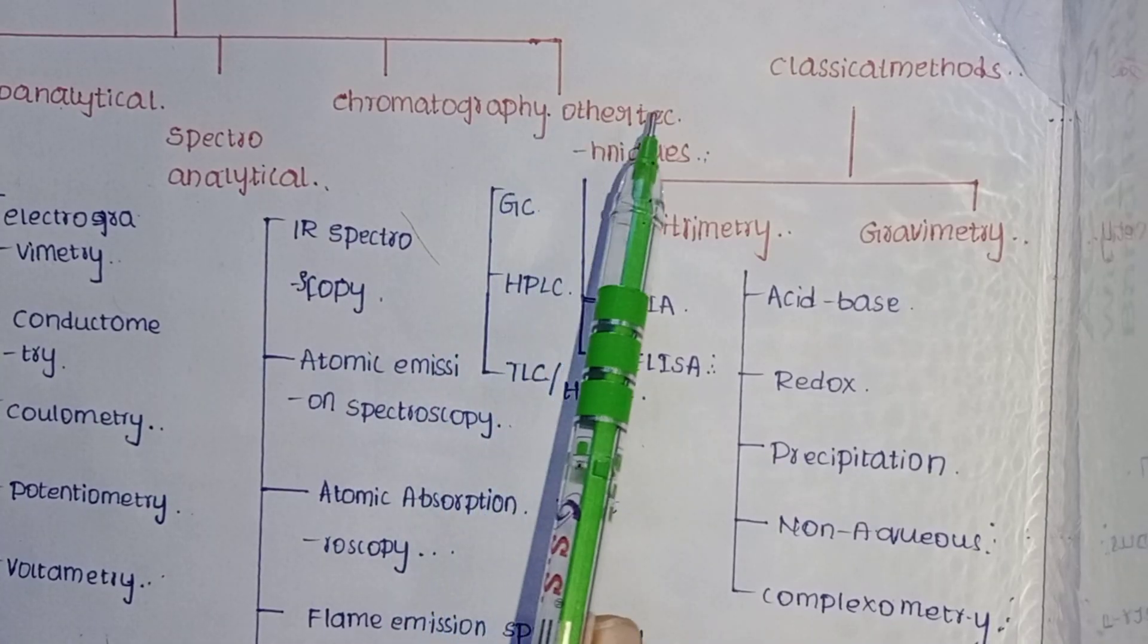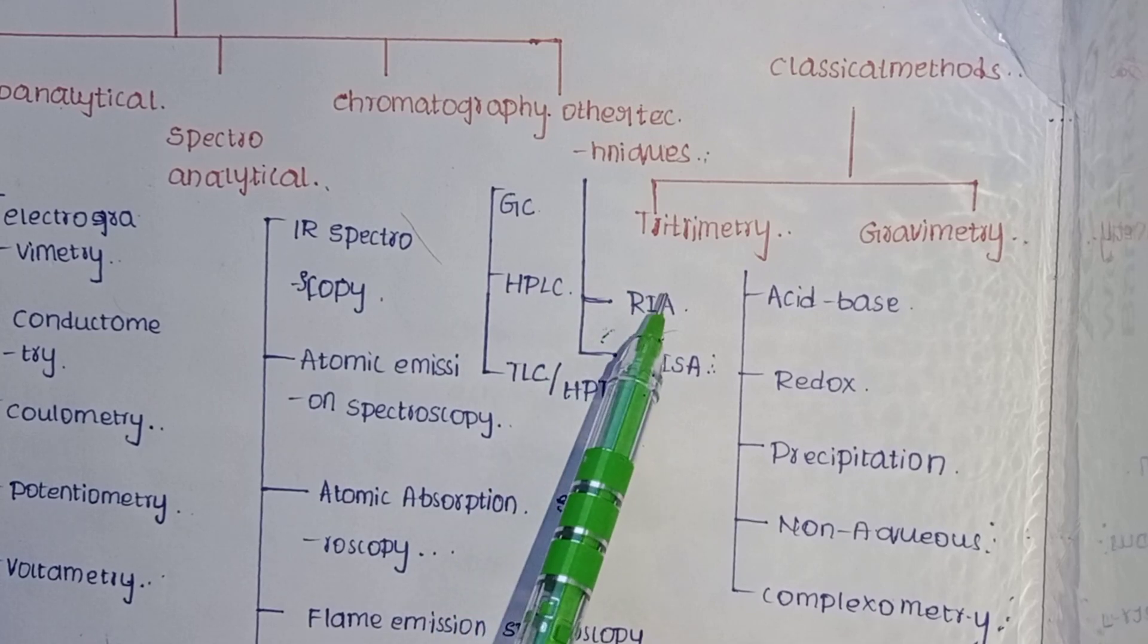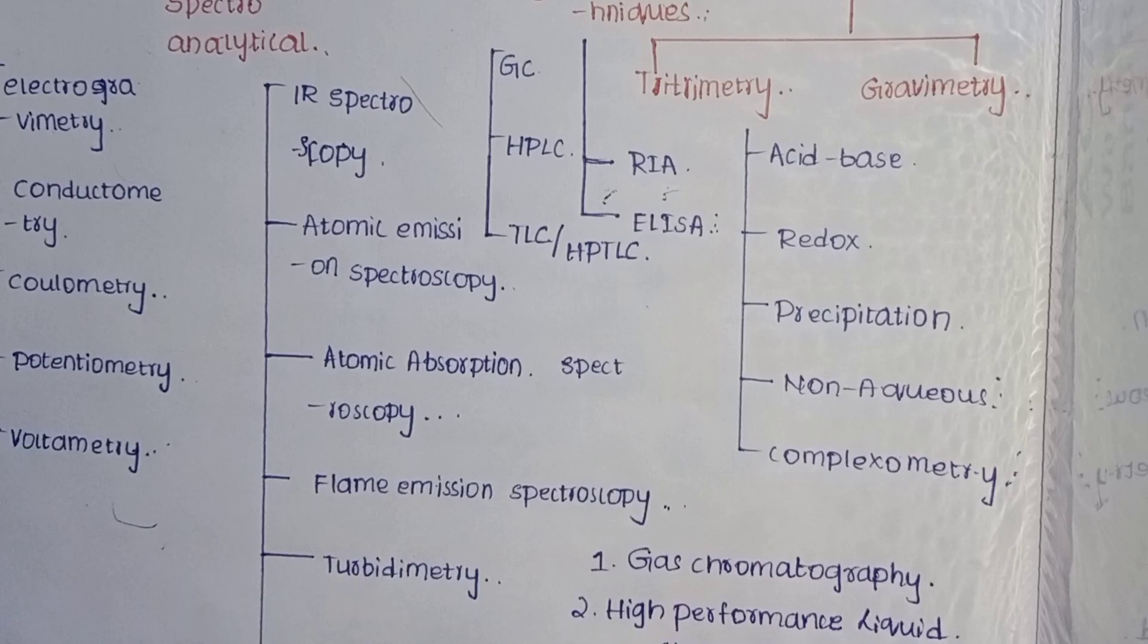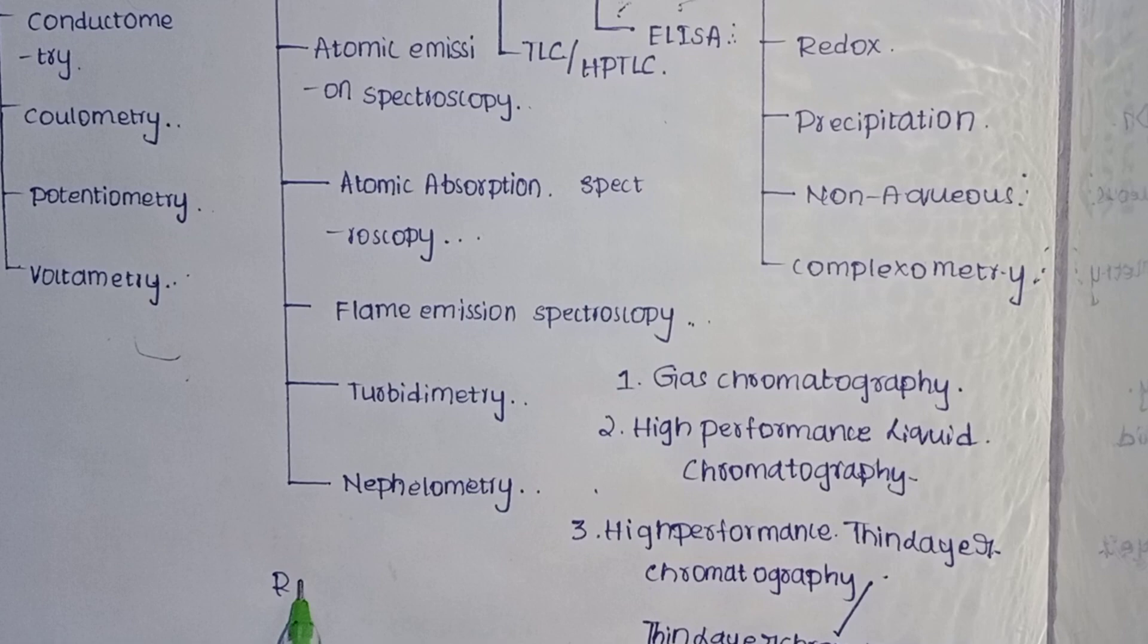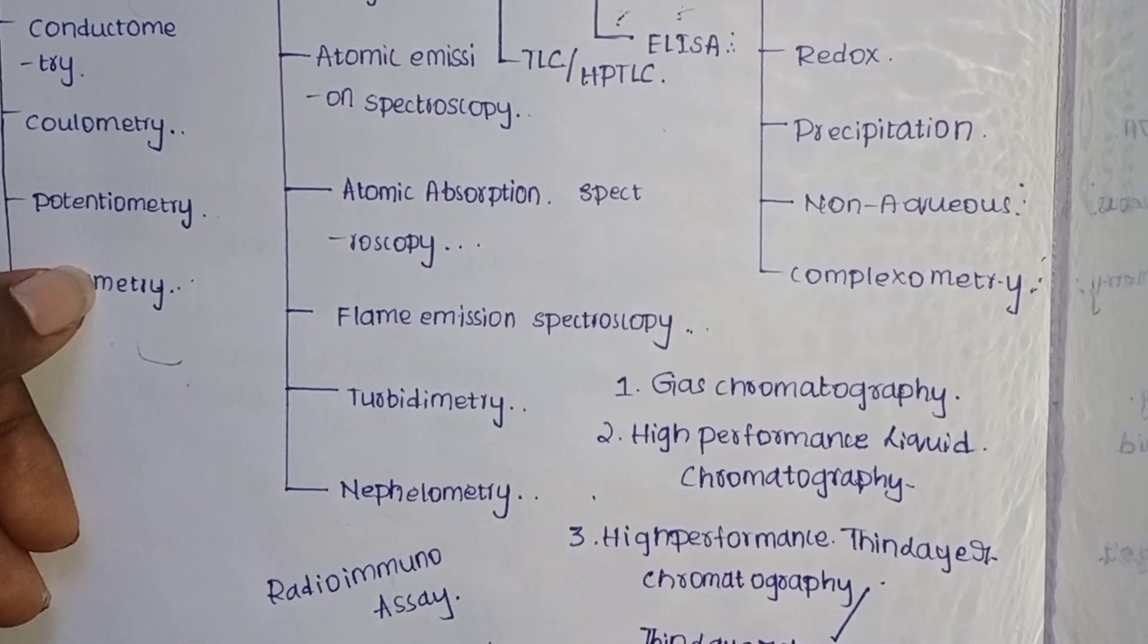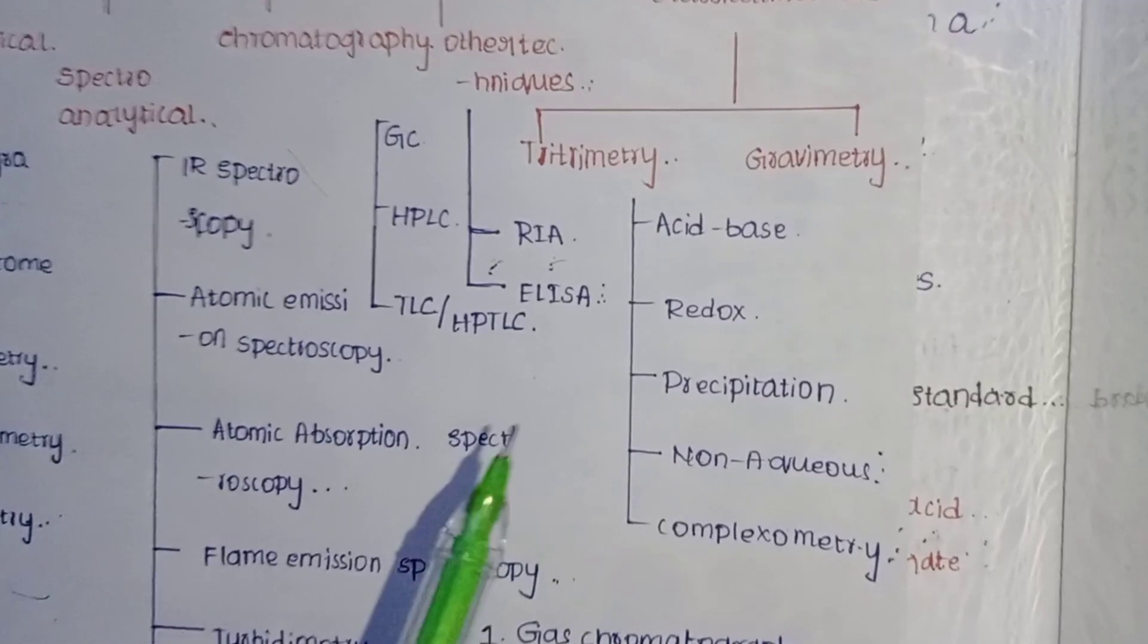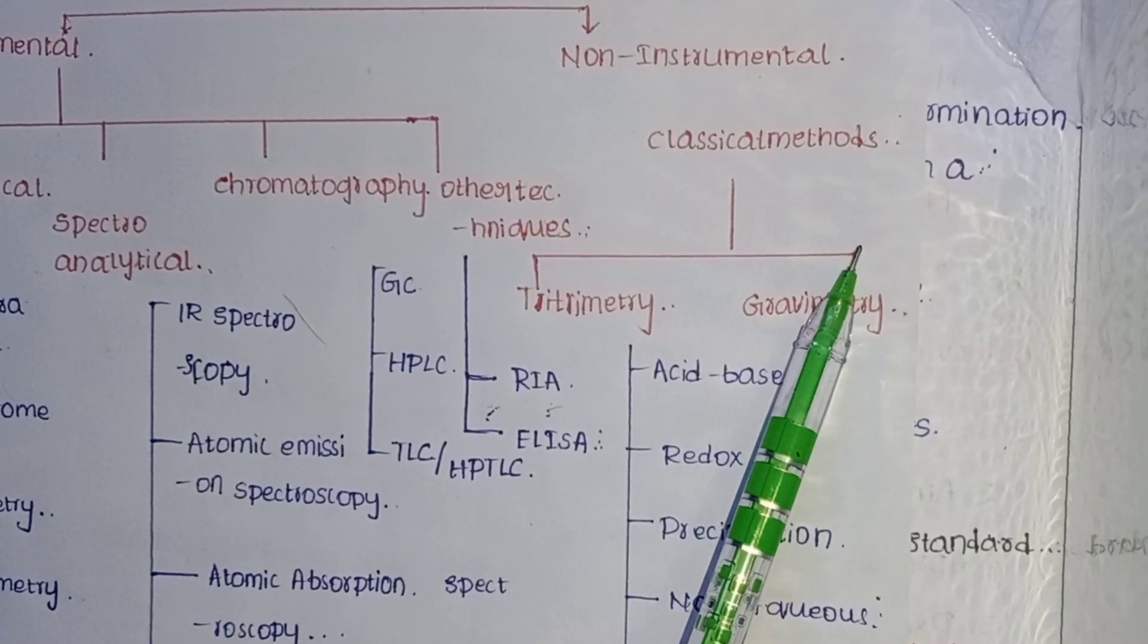Other techniques include RIA (radioimmuno assay) and ELISA (enzyme-linked immunosorbent assay). The classical methods, or non-instrumental methods, are divided into titrimetry and gravimetry.